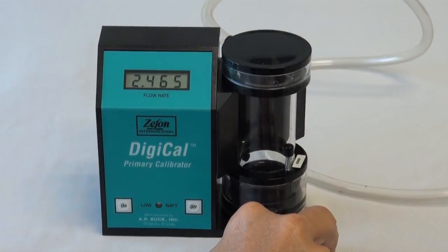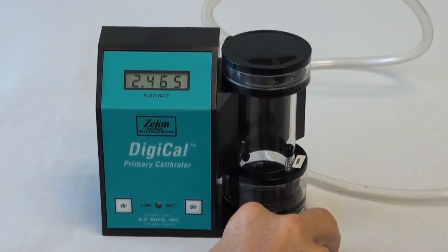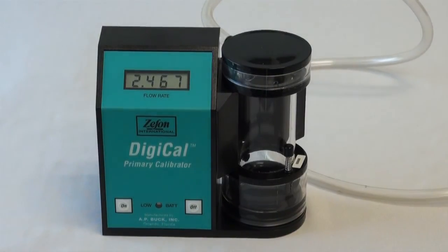Operate the primary calibrator as directed by the manufacturer's instructions. Obtain at least six readings which are very close to one another. In this video, we have an average reading of 2.46 liters per minute according to the primary calibrator.